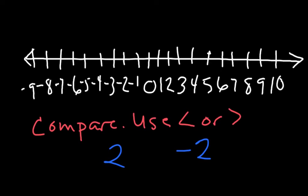Here's another number line and another kind of problem you're going to see on homework tomorrow. The directions say compare, use less than or greater than. So that means they want us to put less than or greater than here. 2 and negative 2.